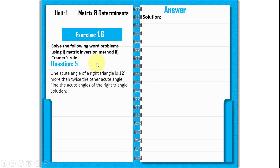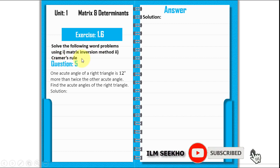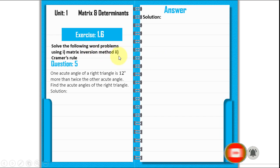We have two methods to solve this question. One is the matrix inversion method and the second is Cramer's rule. So now we will solve using the matrix inversion method. Let's go to our solution.